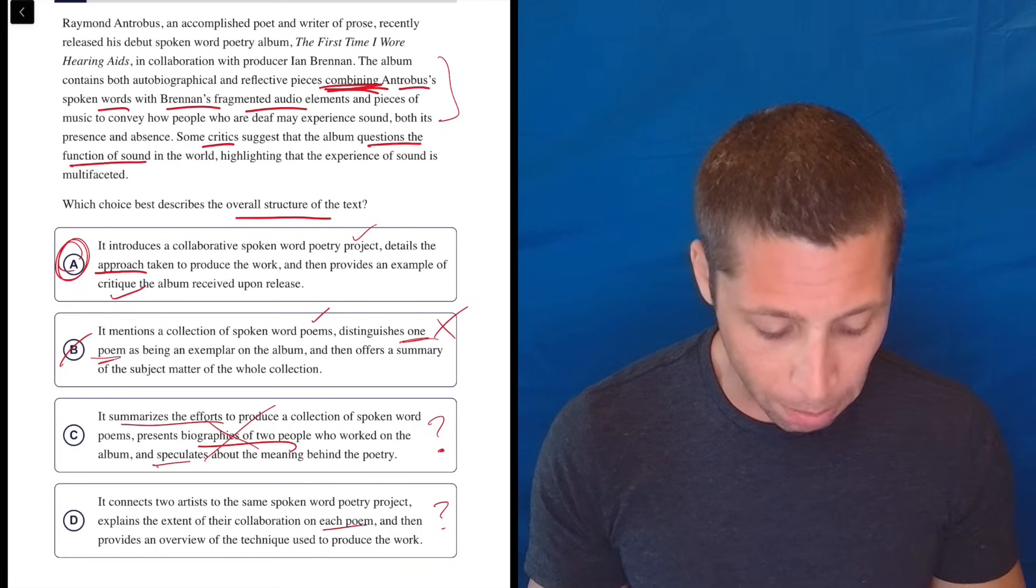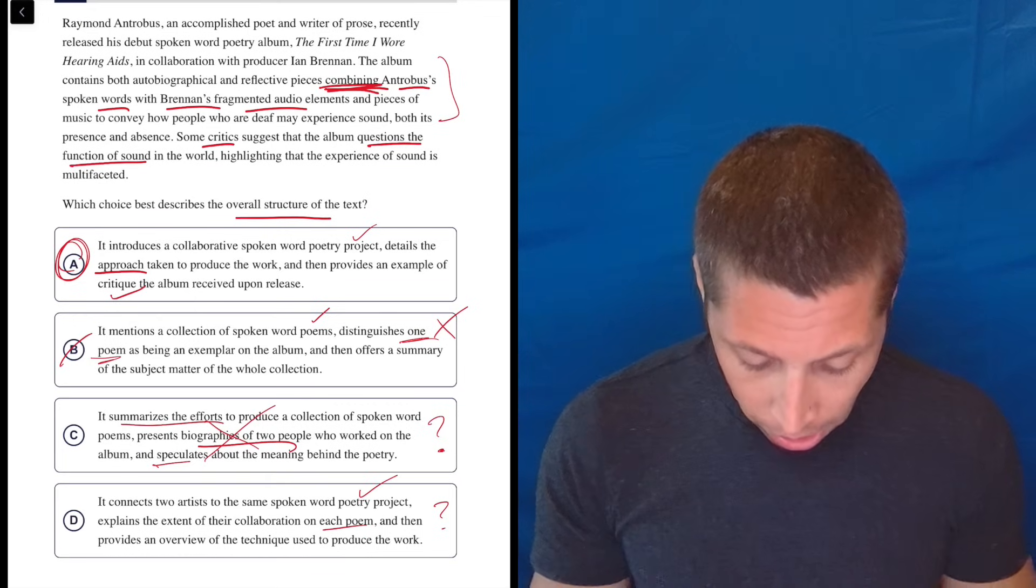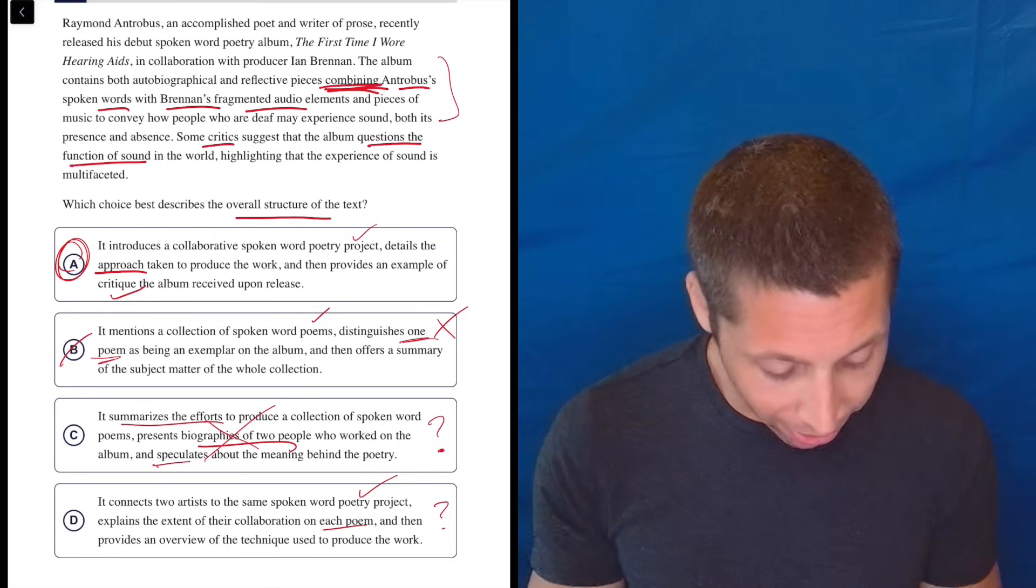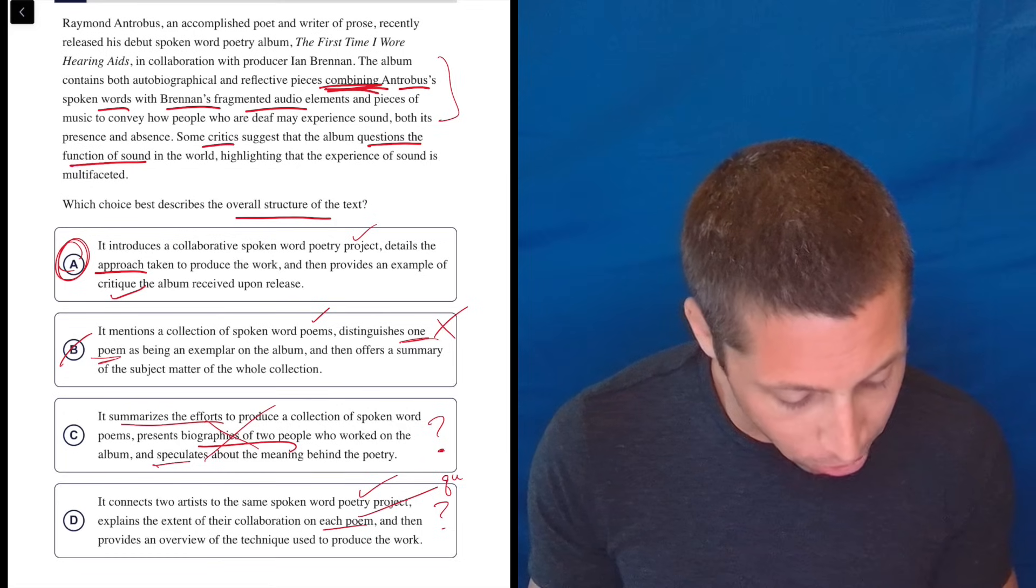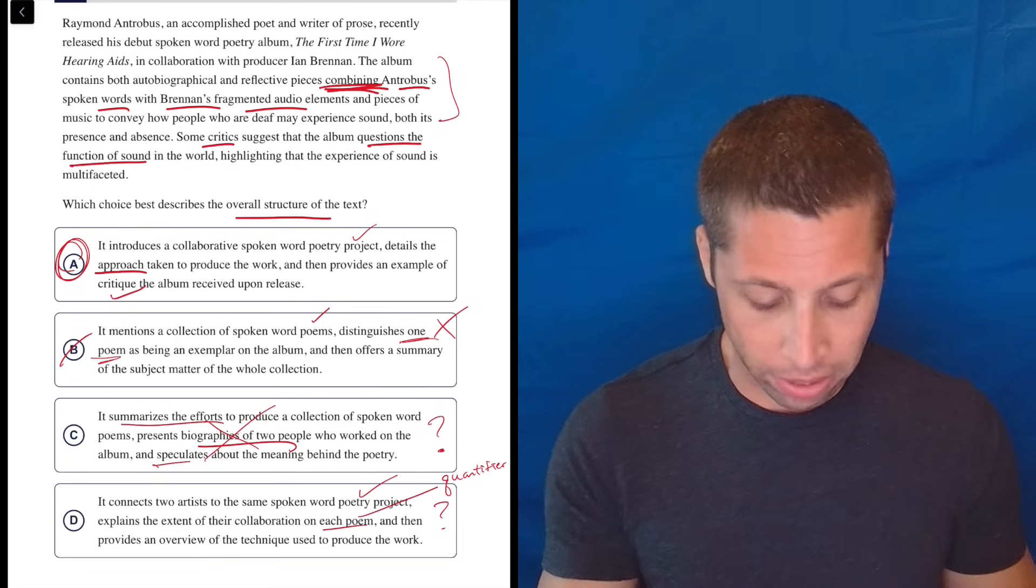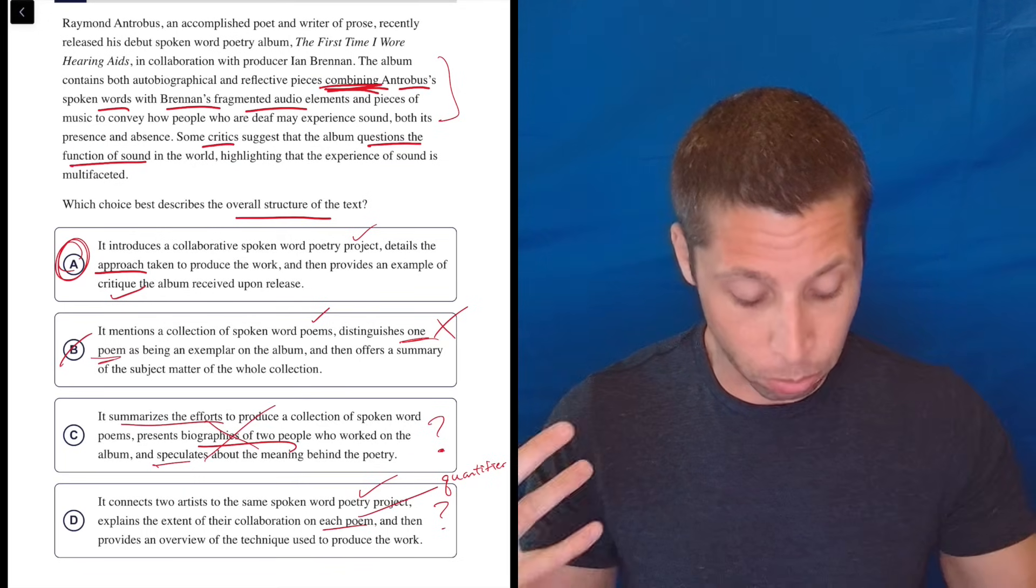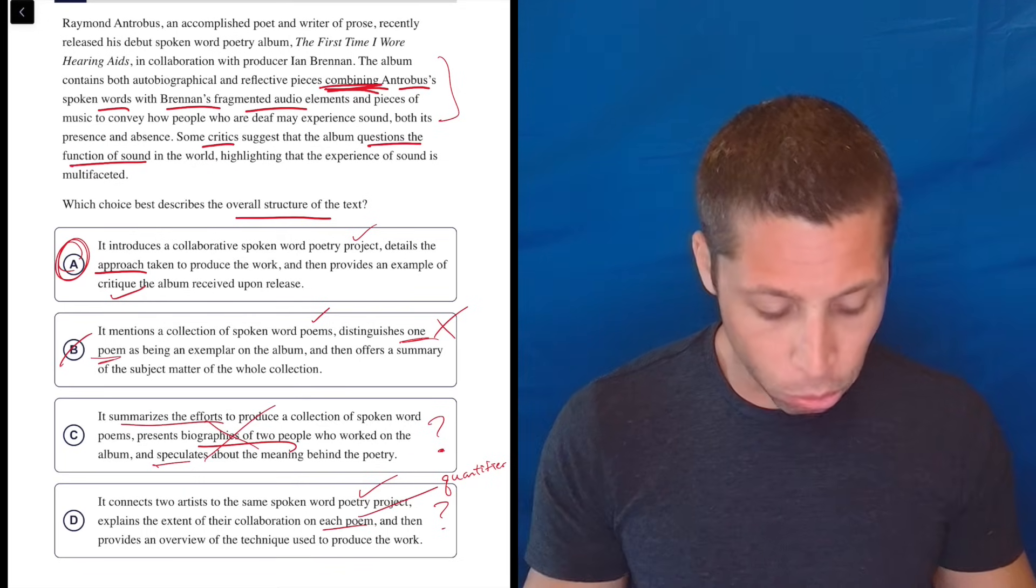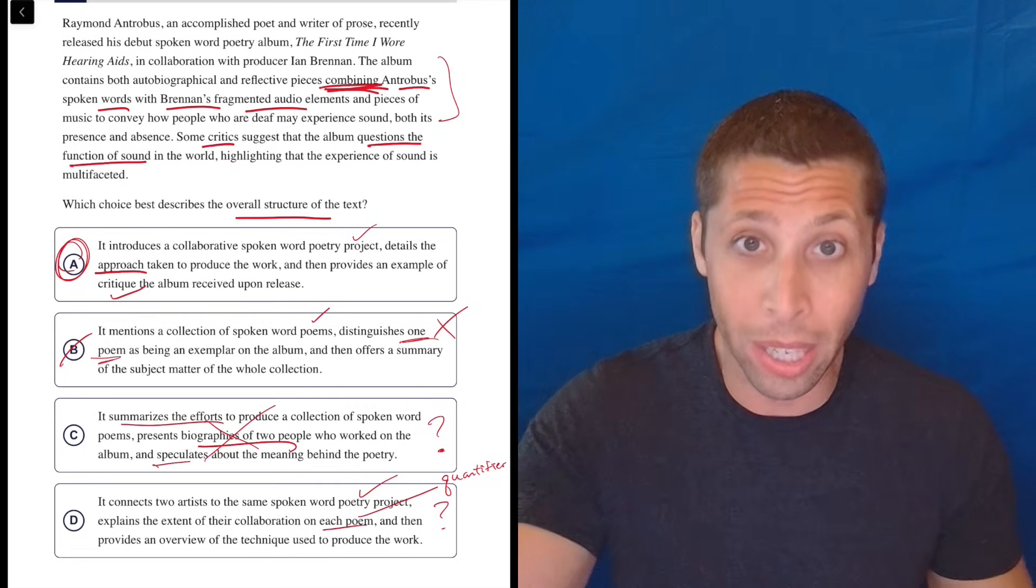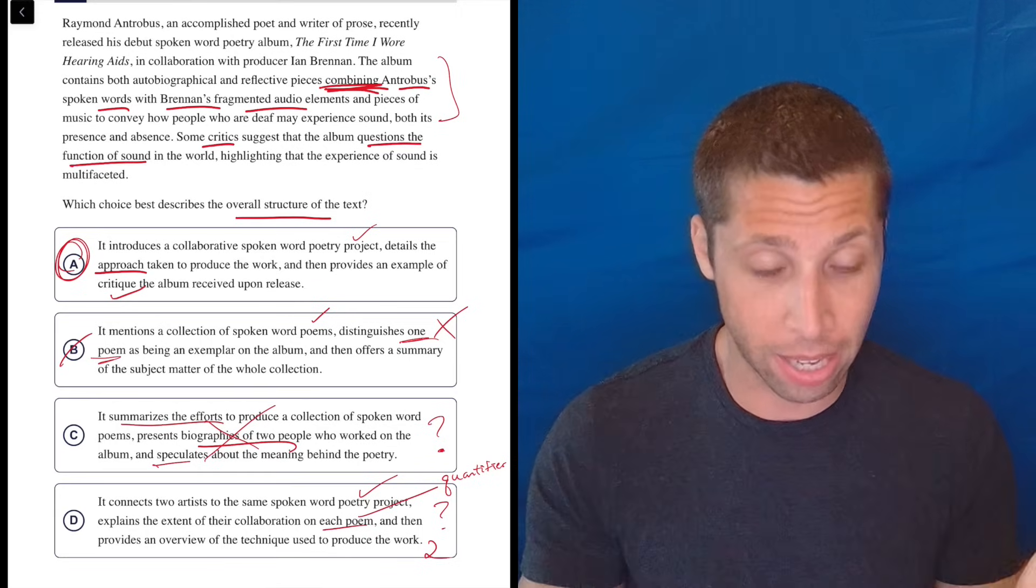Looking at D, it connects the two artists to the same spoken word poetry project. Sure, it does. It says they collaborated, so I'm okay with that part. Explains the extent of their collaboration on each poem. This is kind of a quantifier trap that I really just noticed because I'm so in tune with those particular types of traps. It doesn't talk about their extent on each poem. It talks about their overall collaboration and what that looked like. And then provides an overview of the technique used to produce the work. That, I think it does, but I don't think it does it at the end. I think that's what it's doing in the middle. This feels like sentence two to me, but notice they're putting it in the place of where sentence three is in the passage.